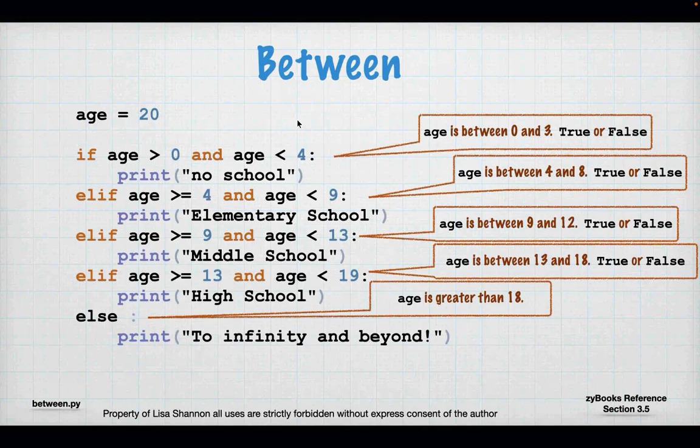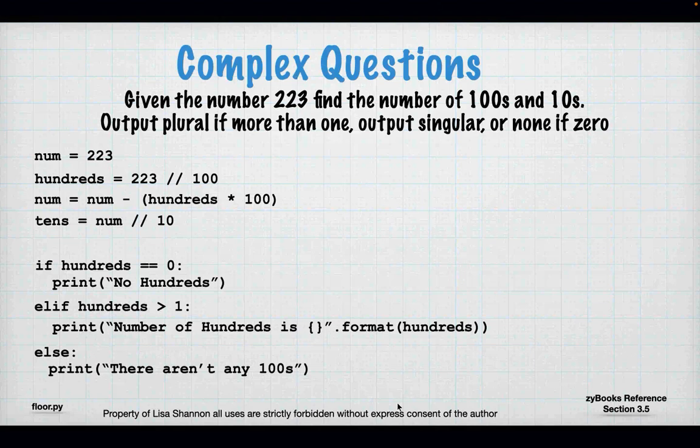We're going to go over a bit tonight. Complex questions: given the number 223, find the number of hundreds and tens. Output plural if more than 1 and output singular if there's exactly 1. This is kind of like a lab that you have to do — a very shortened and abbreviated version.